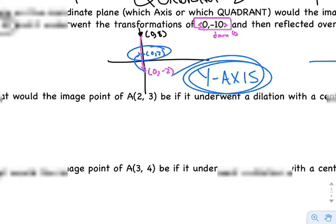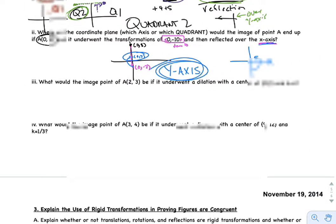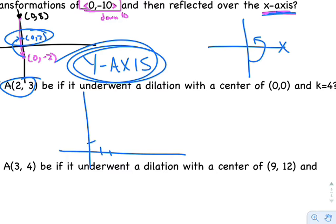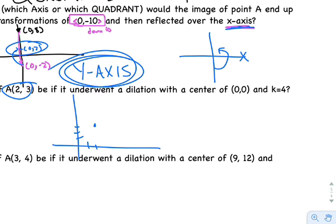Alright, let's keep moving. Oh, back to (2,3). So (2,3), let's go ahead and draw this guy in. So (2,3), 1, 2, 1, 2, 3 is here. Now it says it undergoes a dilation with center (0,0) and k equals 4.